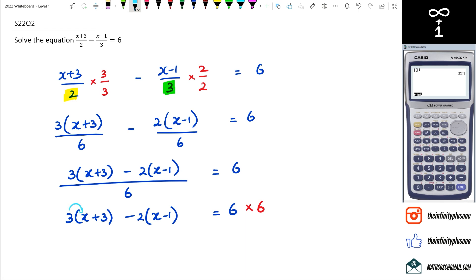And at this point I can expand the brackets, so I've got 3 times X, 3 times 3, negative 2 times X, and negative 2 times negative 1. So what I've got here is 3X plus 9 minus 2X, and negative 2 times negative 1 is positive 2, equals 6 times 6 which is 36.